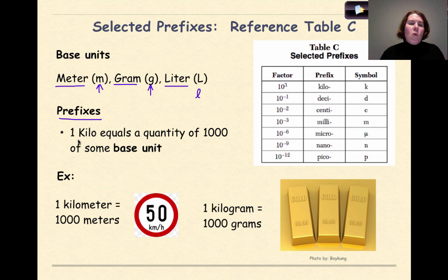So for example, one kilo of something, and we see kilo right here, which is a factor of 10 to the third, which we represent with a little k. One kilo equals a quantity of a thousand of some base unit. So for example, one kilometer is equal to a thousand meters.